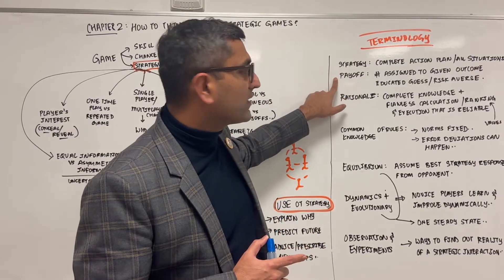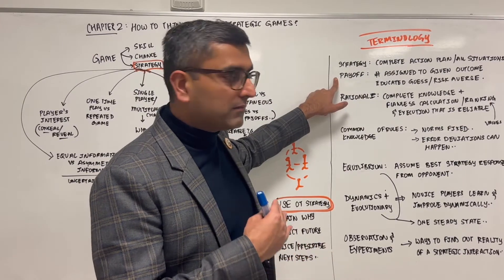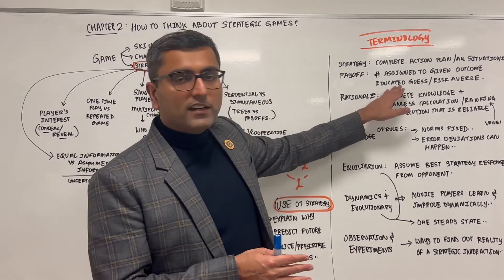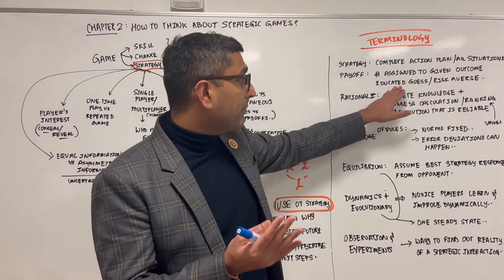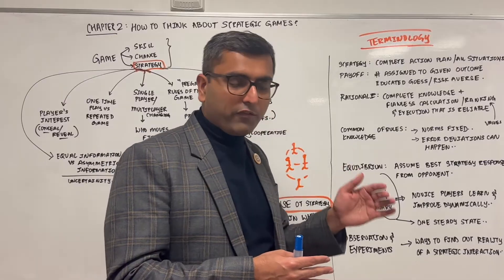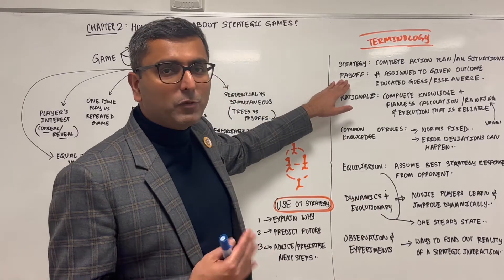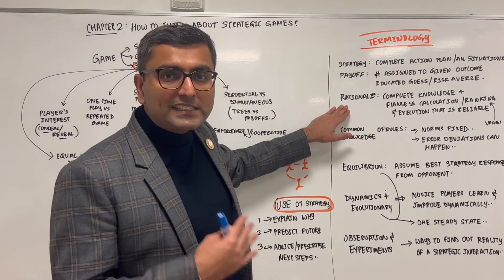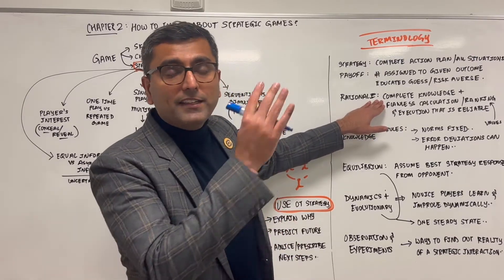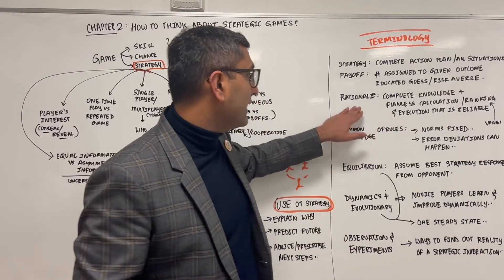Payoff is basically an educated guess as to what you will get if you made a certain decision. You assign a number and give a specific outcome to a decision. If there is an expected outcome because there is lots of probability associated with what will happen, then it's an expected guess. We would assume people are risk averse, meaning they would prefer a constant, sure-shot payoff over a weighted average or probabilistic payoff. We assume people are consistent and rational, meaning they'll always know what they want, have complete knowledge, and be flawless in knowing and executing their preferences in a reliable and consistent way.